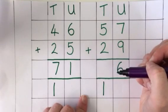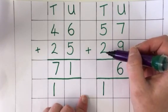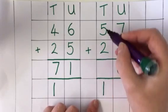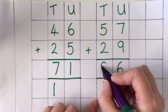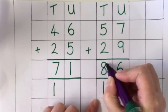5 tens and 2 tens makes 7 tens, and this 1 ten makes 8 tens altogether. So the answer is 86.